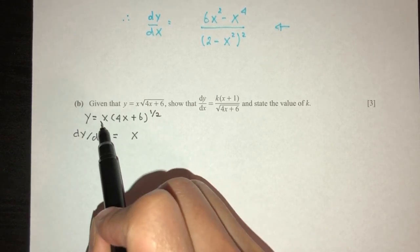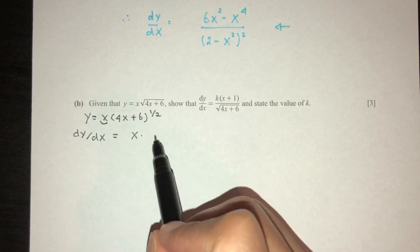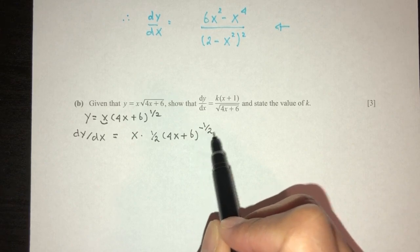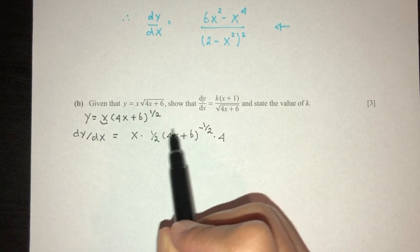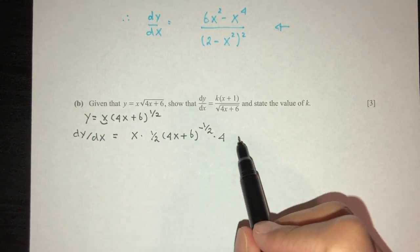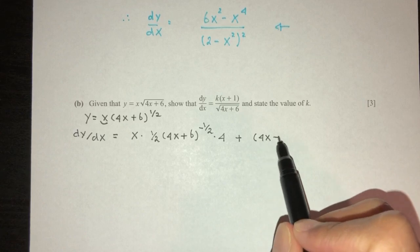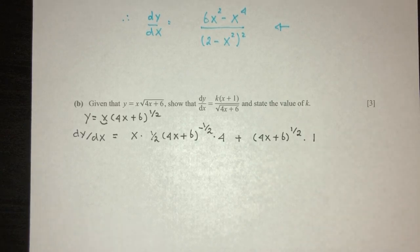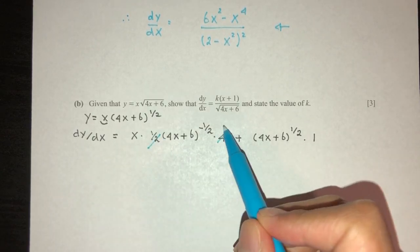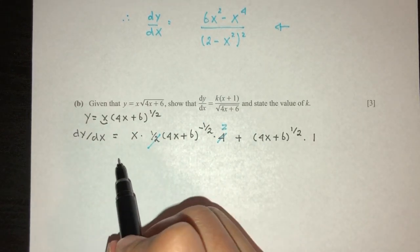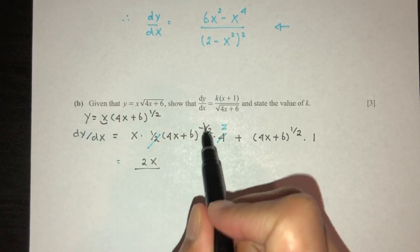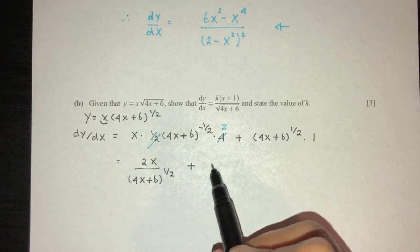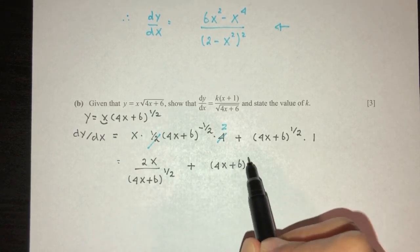Now use the product rule. dy/dx = first term as it is, times d/dx of (4x + 6)^(1/2) — that gives (1/2)(4x + 6)^(−1/2) times 4 — plus the second term (4x + 6)^(1/2) times d/dx of x, which is 1. Simplifying: this becomes 2x(4x + 6)^(−1/2) plus (4x + 6)^(1/2).